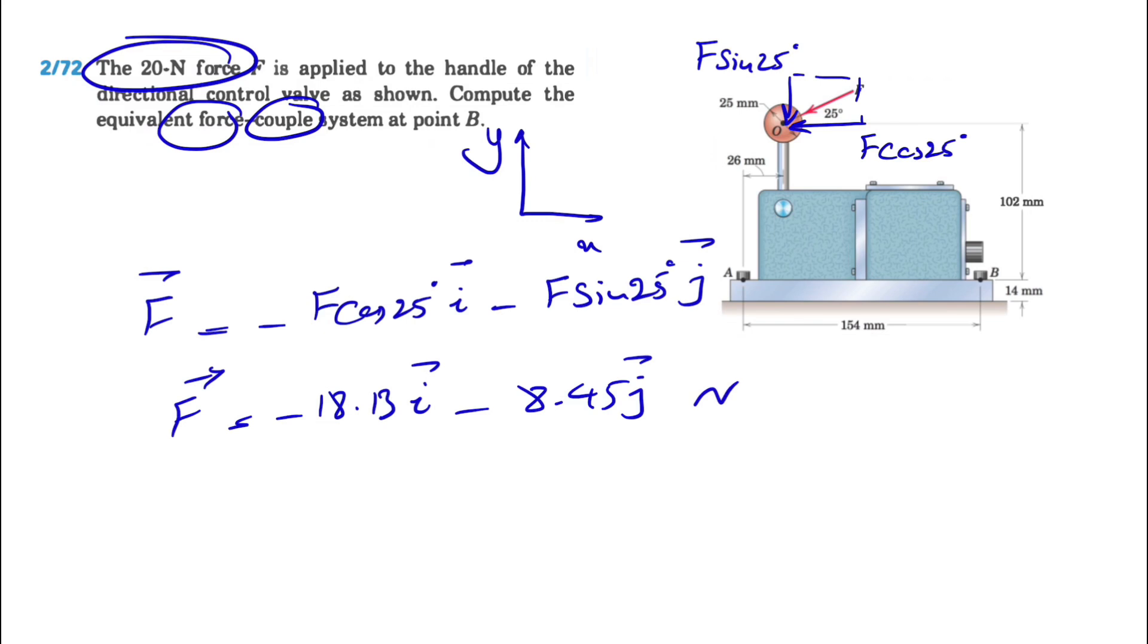Next step, we need to find the moment about point O. Counterclockwise is positive. The moment of the x component is counterclockwise, so we're using the 2D shortcut for finding moment - I'll put the link in the description if you need to refresh. F cosine of 25 degrees times the vertical distance to B, which is 102 millimeters, divided by 1000 to get meters.